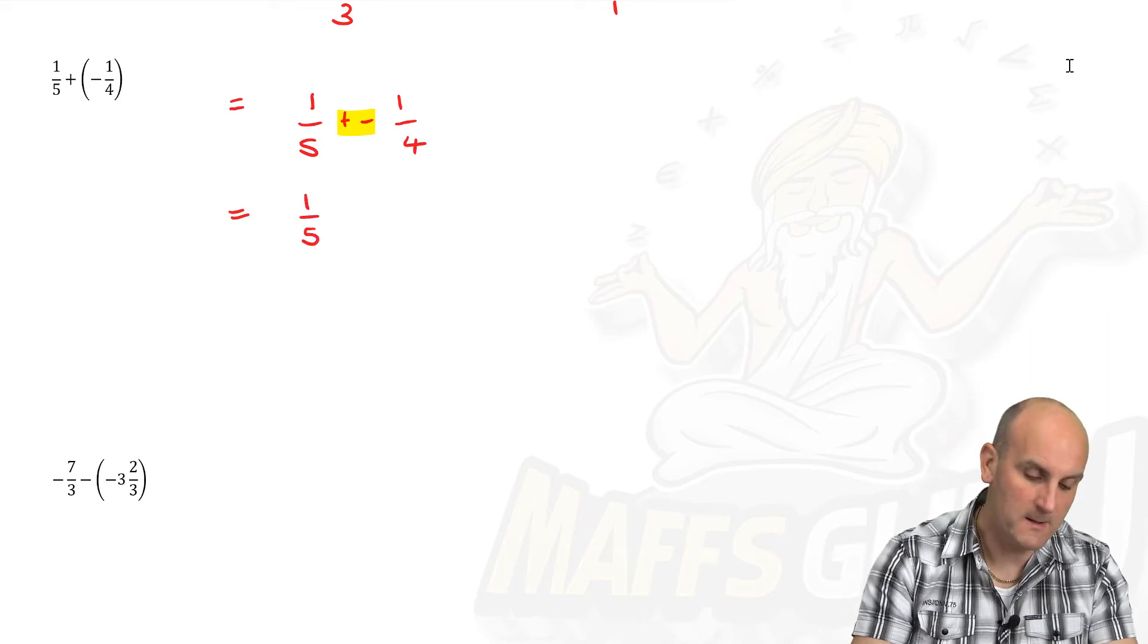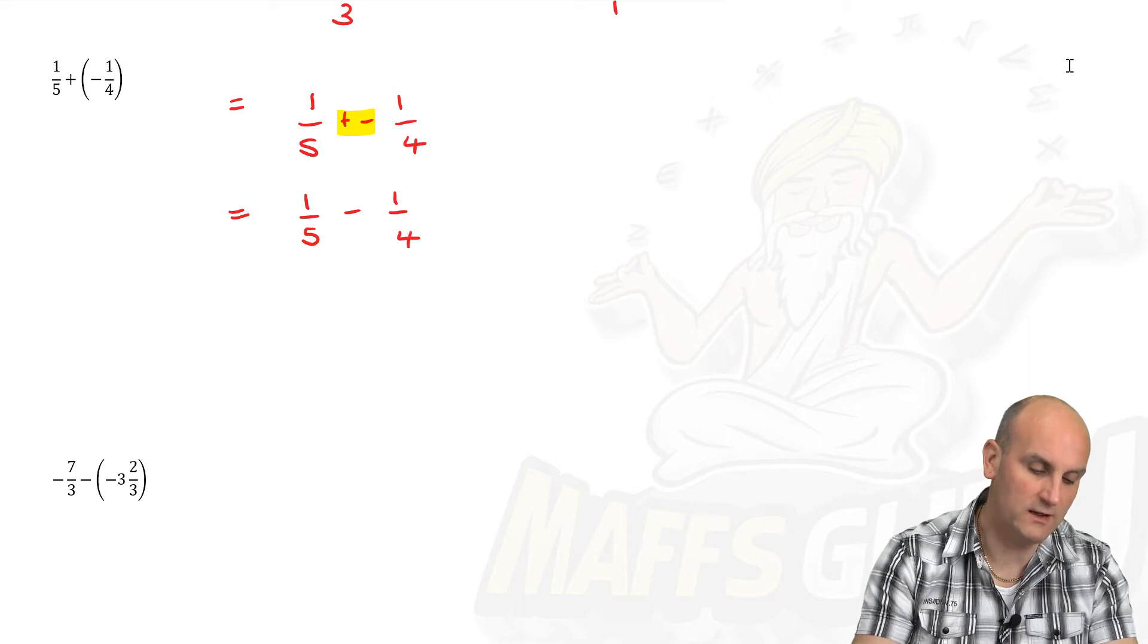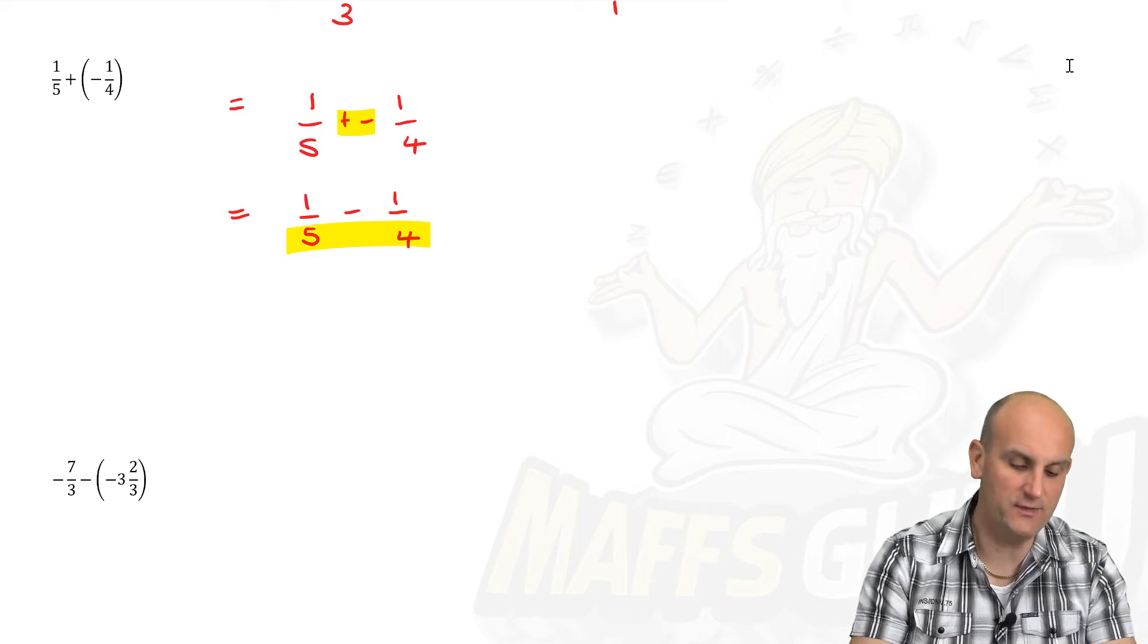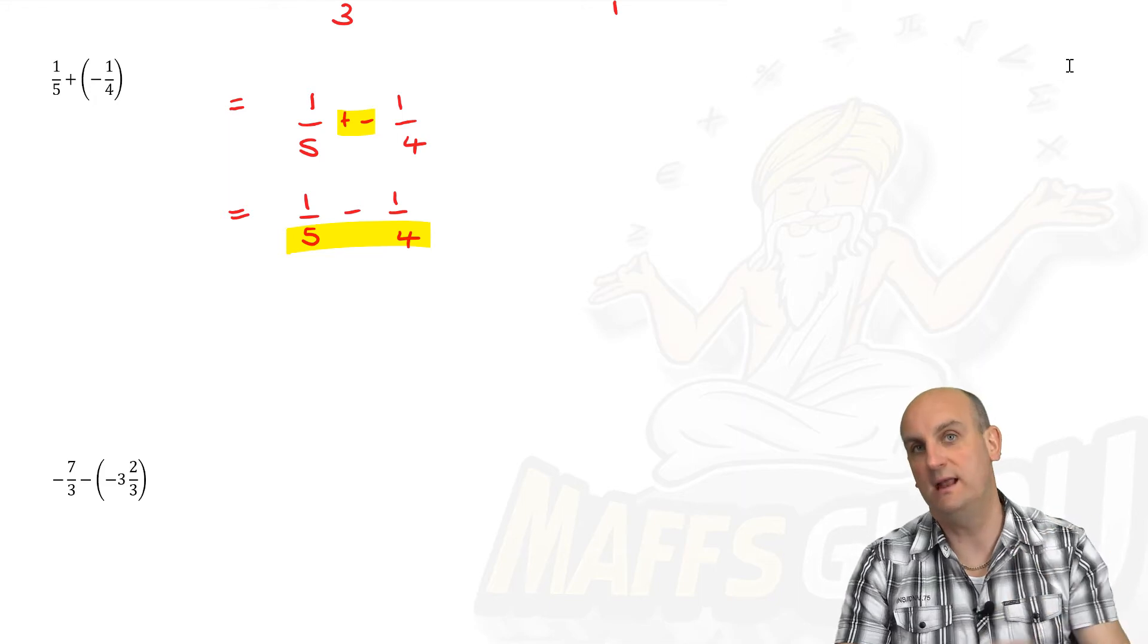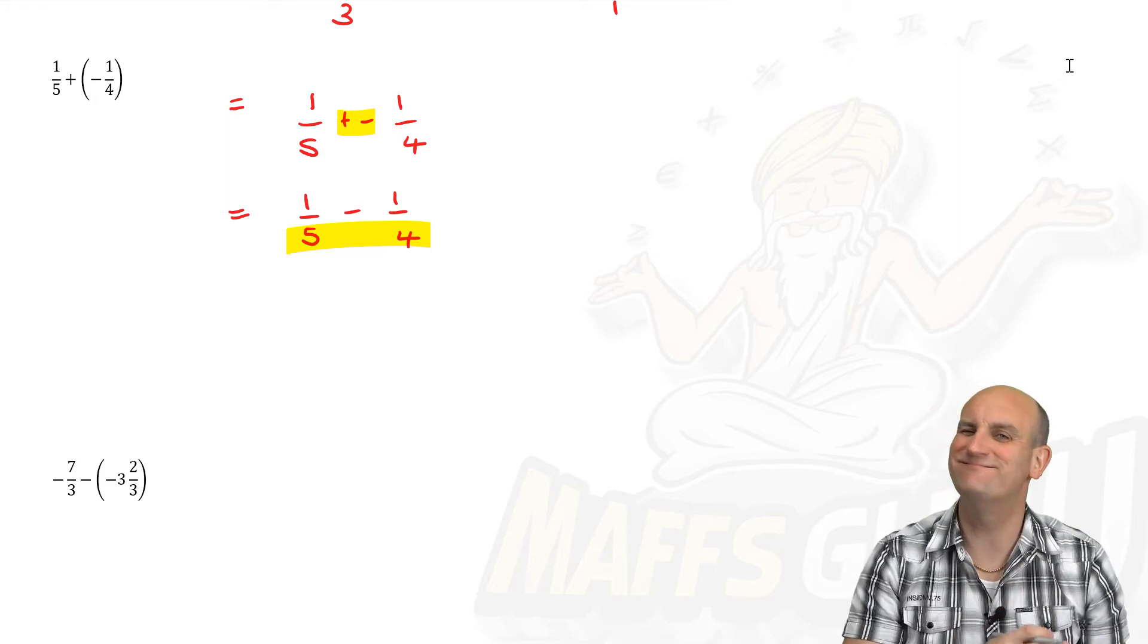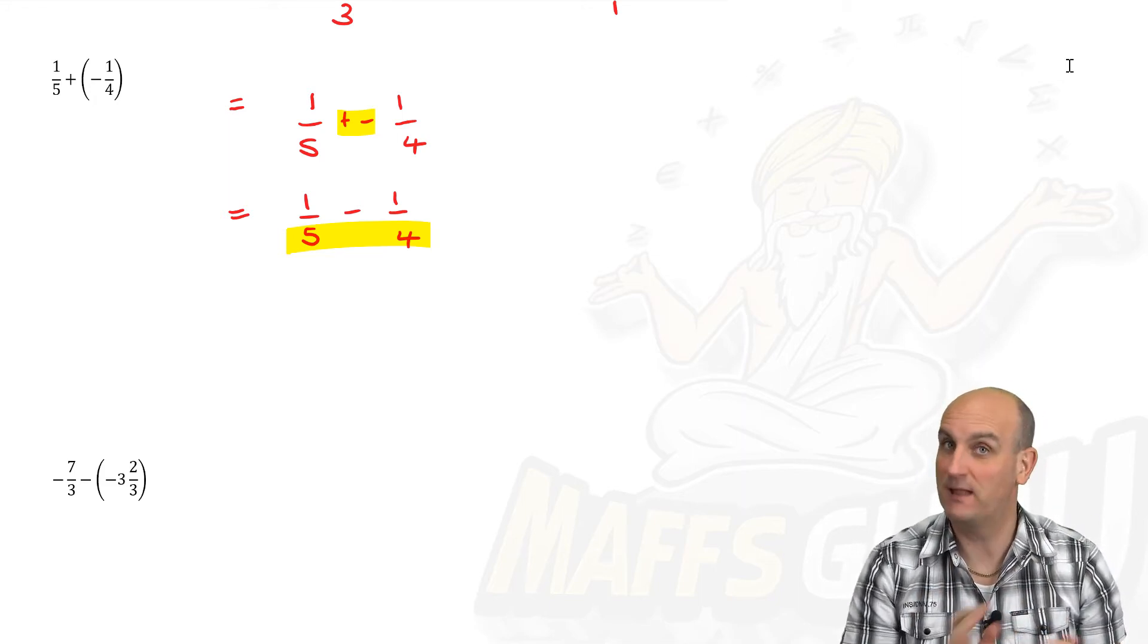One fifth minus one quarter. All right, we're subtracting fractions. Are the denominators the same? They are not. And so we now ramp it up a little bit. We now go, we've got to make those denominators the same. How?